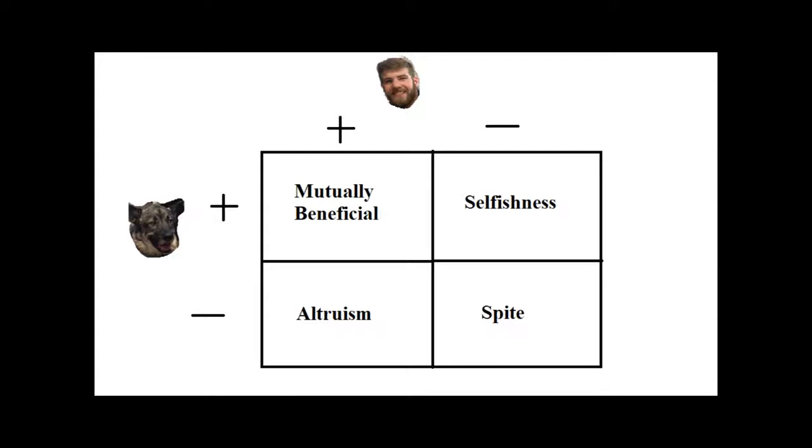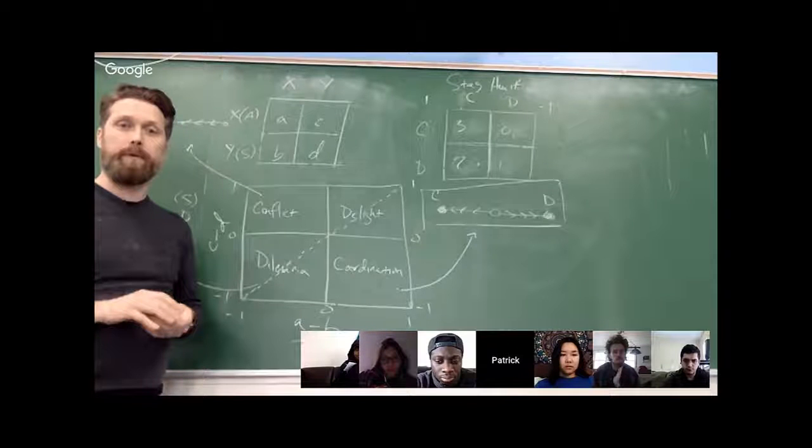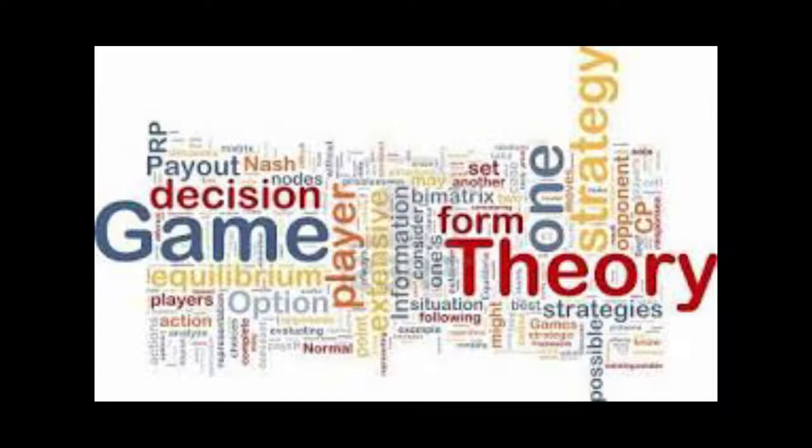Hamilton's model only outlines one-way interaction and does not consider the actions of the recipient. This is where we introduce Patrick Forber and his lecture on the evolution of cooperation. Patrick discusses the use of game theory to create models of two-way species interaction.